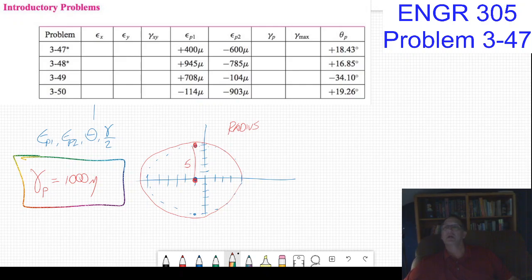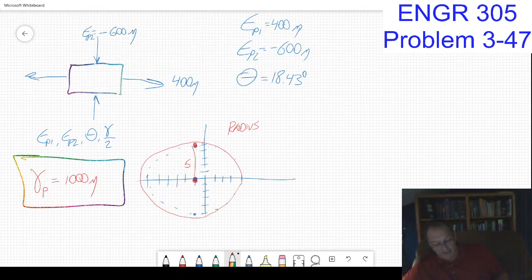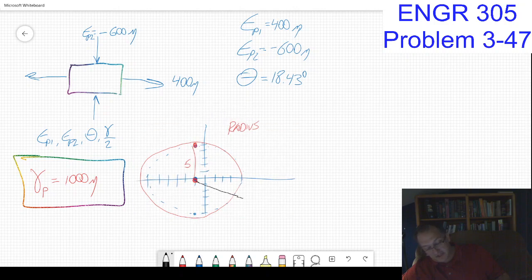They're telling me that theta_p, the angle of orientation between my x-axis, y-axis and the n and t-axis, is 18.43. Since it's positive, this is my x-axis and that is 36 degrees because we're in two theta land.